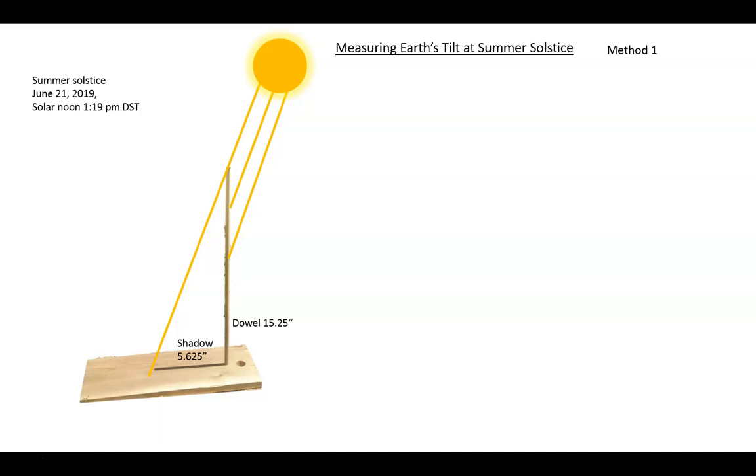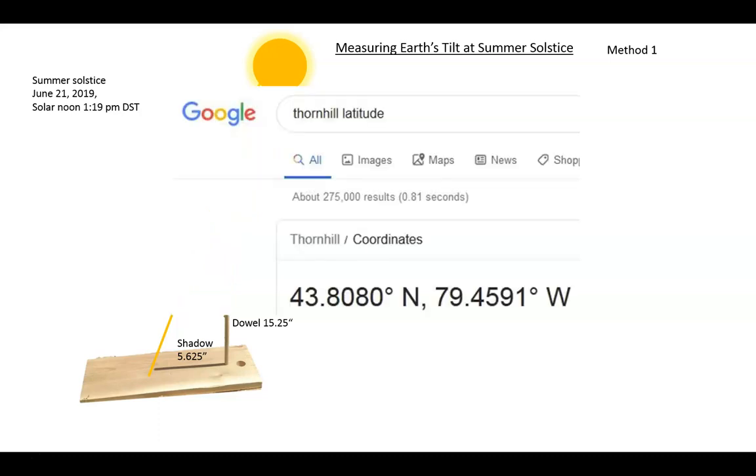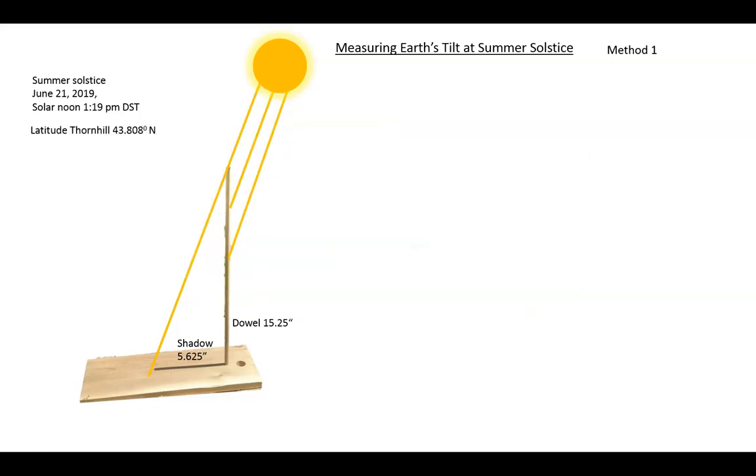At this time the shadow is the shortest, which is what we want. We also need the latitude of Thornhill. I obtained it from the internet. Here it is at 43.808 degrees north, and here it is recorded. Now we will draw an imaginary line from the shadow to the top of the dowel forming a triangle. This angle of incidence I will call ISS for angle of incidence at the summer solstice. It will be calculated using trigonometry from the lengths of the shadow and the dowel.